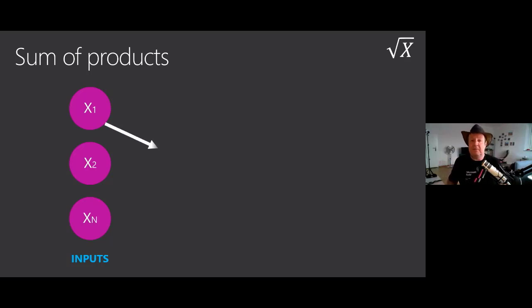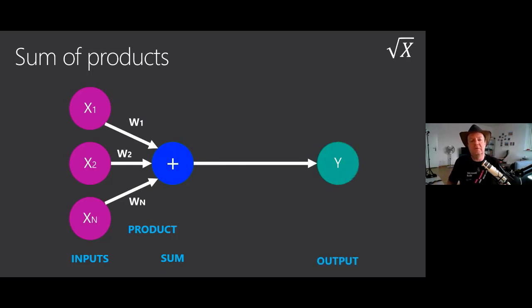Let's imagine we decide to multiply one of the inputs by something. We're going to call that a weight, W1. So we do X1 times W1, X2 times W2, and XN times WN. We want to add all those products. So we do a sum of products and send that to the output.